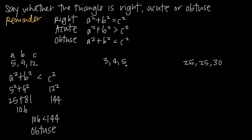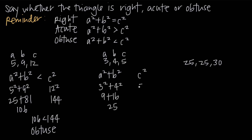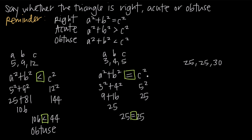For this next example, we always take the largest value to be c. The other two don't matter, so a and b are the smaller values and c is 5, the largest. We find a squared plus b squared: 3 squared plus 4 squared equals 9 plus 16, or 25. For c squared, since c equals 5, we get 5 squared, or 25. The relationship between 25 and 25 is that they are equal to one another, so a squared plus b squared equals c squared. Looking back at our chart, that means these three side lengths represent a right triangle.